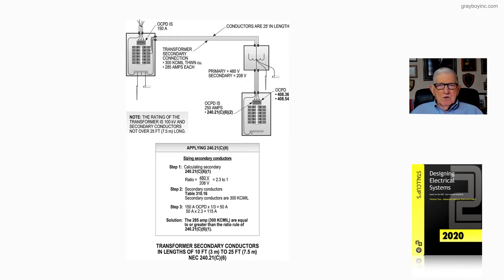So the note tells us in the illustration, the rating of the transformer is 100kVA, and the secondary conductors are not over 25 foot, but they're over 10 foot. So we have a 250 amp overcurrent device in the panel board, and we're complying with 408.36.